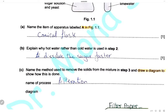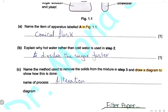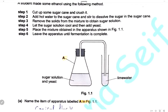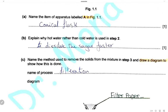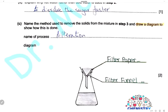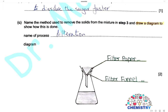Name the method used to remove the solid from the mixture in step 3 and draw a diagram to show how this is done. The solid in step 3 is the crushed sugar cane residue. Any undissolved solid can be removed by filtration. We can remove the undissolved solid by using a filter funnel and filter paper. The undissolved solid remains on the filter paper and the sugar solution will be in the flask.